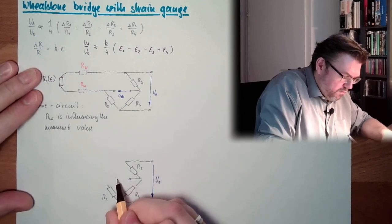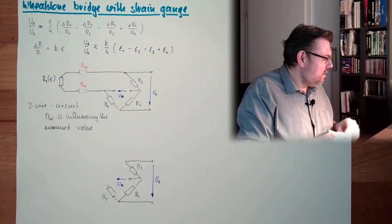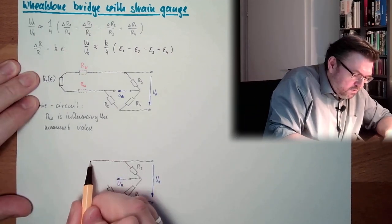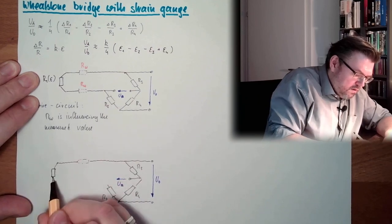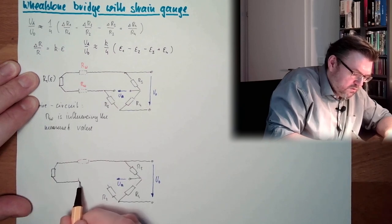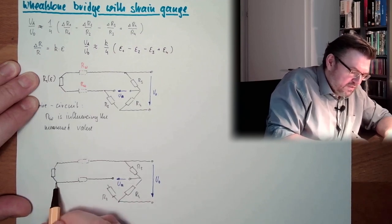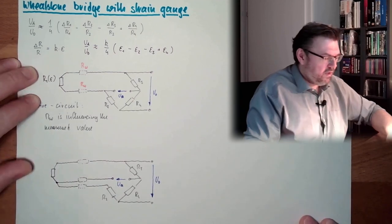Now I make the following: here again is the resistance of the wire for the connection to the strain gauge, and here as well. And here we go back — here is also the resistance of a wire, and I connect it back here with another wire resistance.